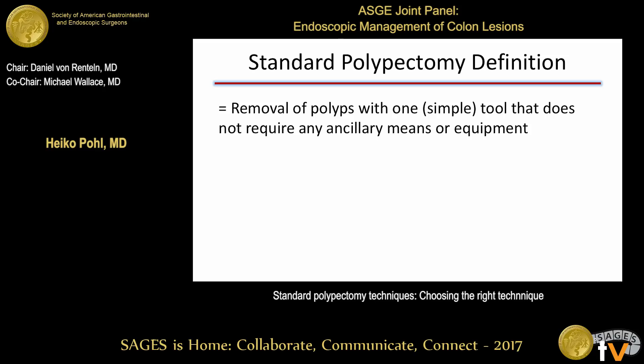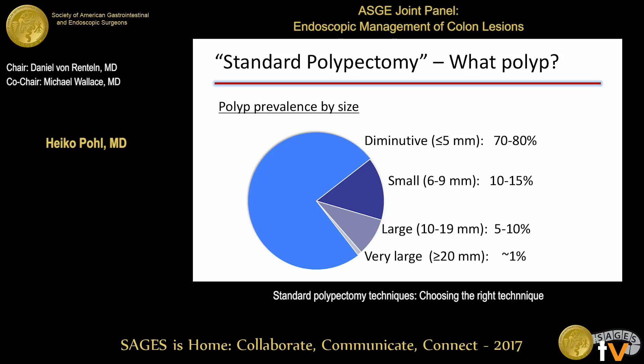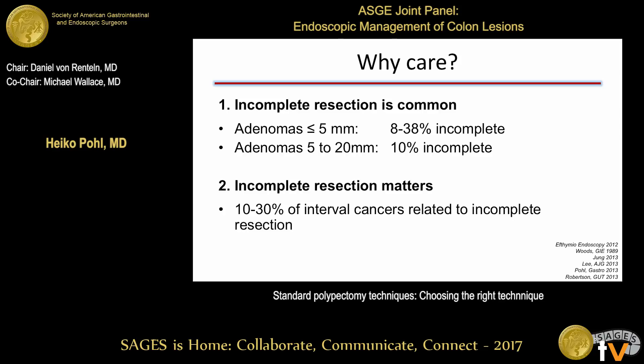When we talk about standard polypectomy, we talk about the removal of a polyp with one simple tool that does not require any ancillary or adjunctive means. This typically applies to polyps that are easy to remove—mostly diminutive or small polyps. Diminutive polyps up to five millimeters and small polyps six to nine millimeters, and even some large polyps, do not require EMR or ESD. So the majority of polyps can be removed by standard polypectomy technique.